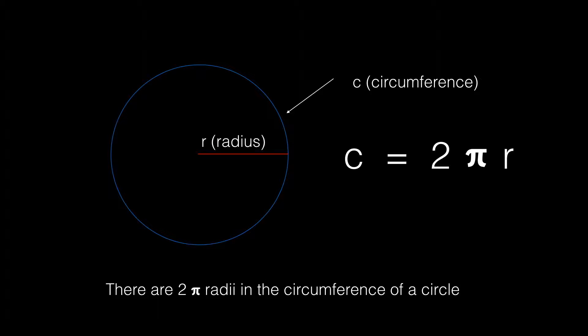This is a concept we need to carry over to the next stage as we start to look at the radian. Perhaps it bears repetition that a circumference is 2 pi radii long—in other words, about 6.28 radiuses long.